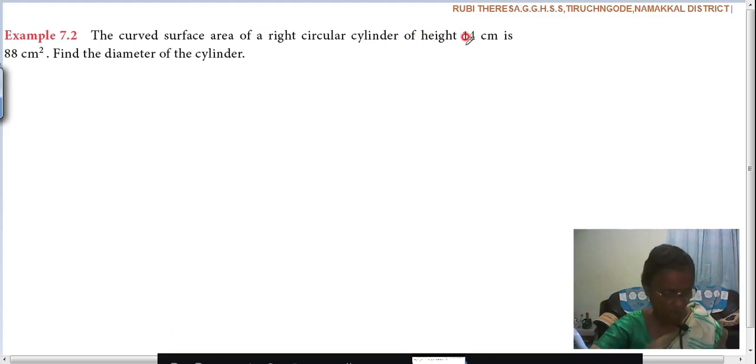14. How you have to read the problem is, the curved surface area of a right circular cylinder is 88 centimeters square. So CSA equal to 88 centimeters square. Height is equal to 14 centimeters.